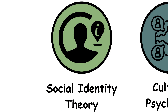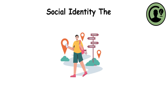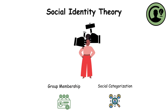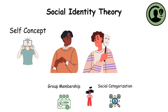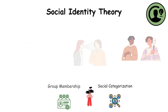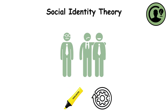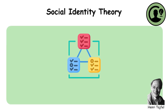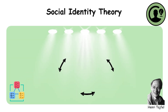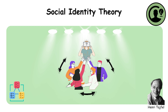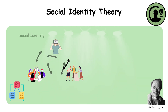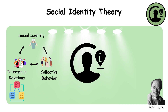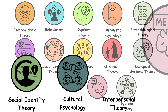The social identity theory. Social identity theory explores how group membership and social categorization shape individuals' self-concept, attitudes and behavior. By highlighting the dynamics of in-group favoritism and out-group discrimination, Henri Tajfel's framework sheds light on the intricate interplay between social identity, inter-group relations and collective behavior, offering valuable insights into the complexities of social identity dynamics.